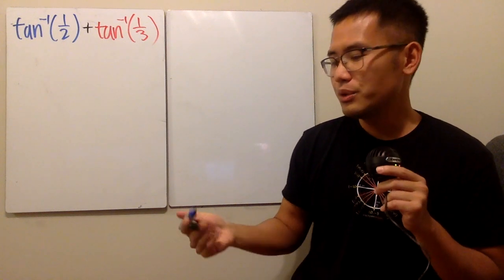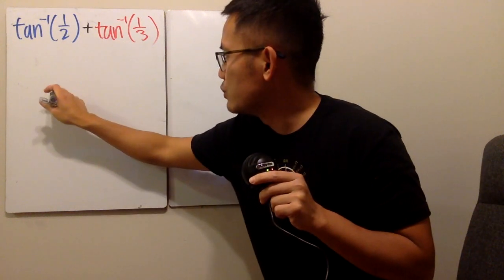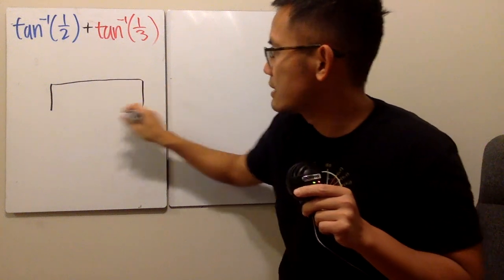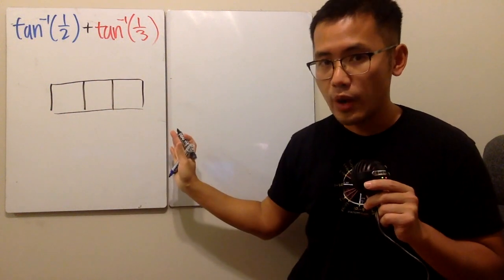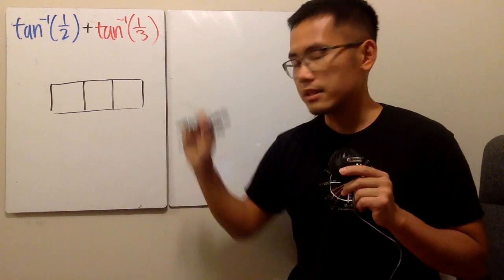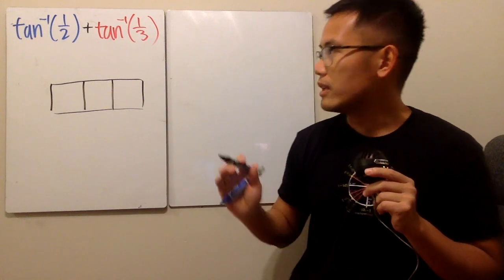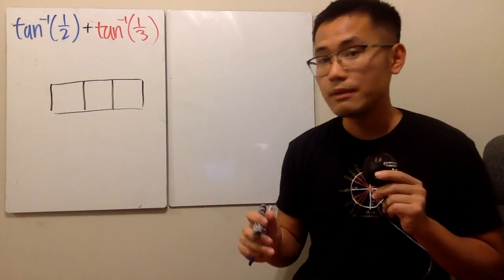Okay, so let's do the following. I'm going to give you guys three squares first, like this, right? So again, here are three squares. And based on this, I can tell you the angle inverse tangent of 1 half, how it looks like.